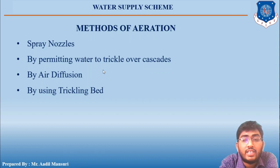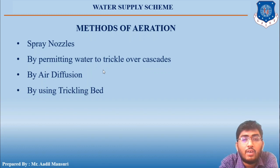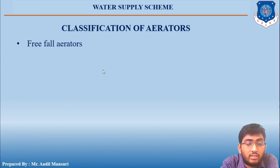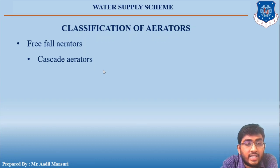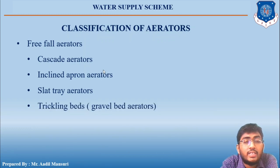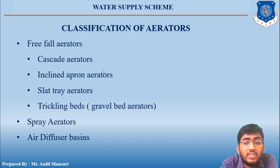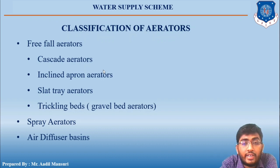Based on these methods of aeration, there are different types of aerators. The classification of aerators is: first, free-fall aerators, which include four types — cascade aerators, inclined apron aerators, slate tray aerators, and trickling bed or gravel bed aerators. The other types are spray aerators and air diffuser basins. These are the different types of aerators used in water treatment plants.